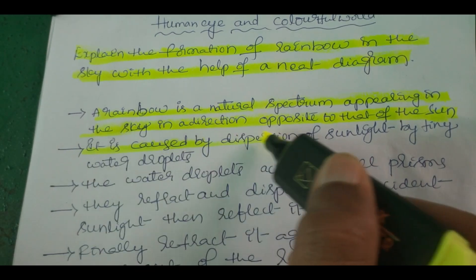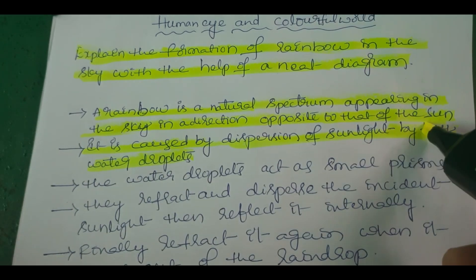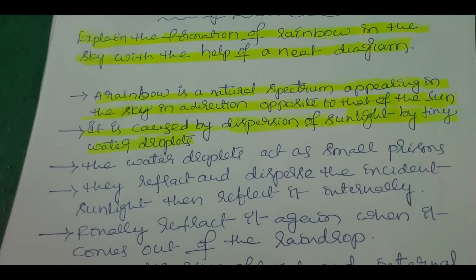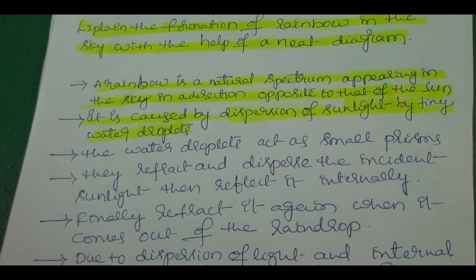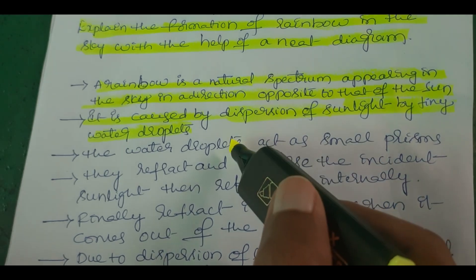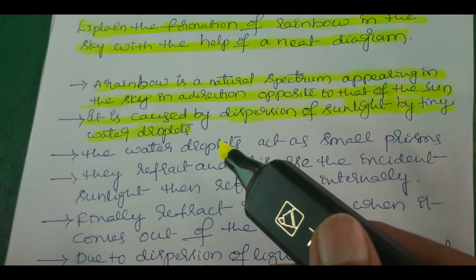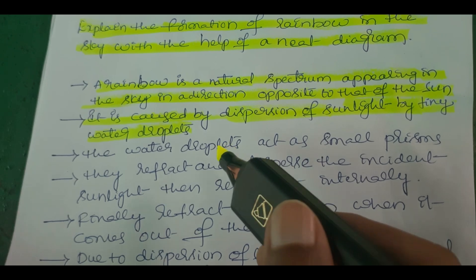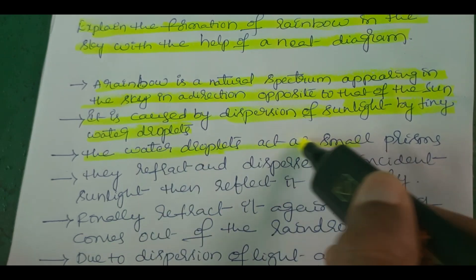It is caused by dispersion of sunlight by tiny water droplets. Dispersion of light — as discussed in previous videos — when white light passes through a prism it splits into seven colors of light, which is called spectrum or visible spectrum. Here, water droplets act as small prisms. When sunlight passes through a water droplet, the white color splits into seven colors — that is dispersion.